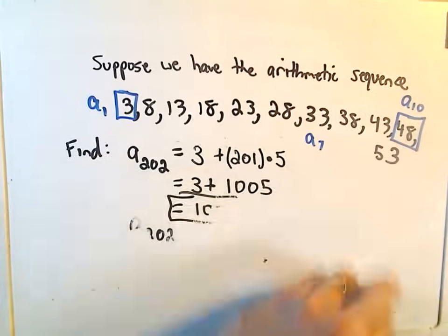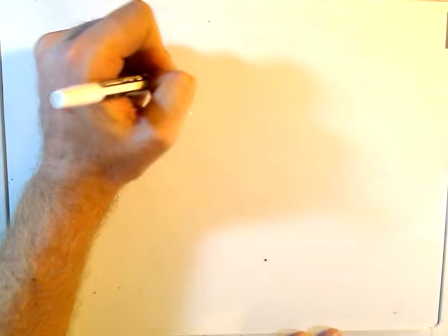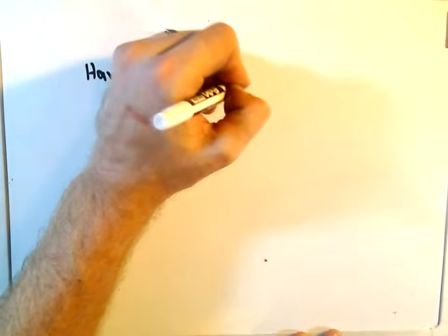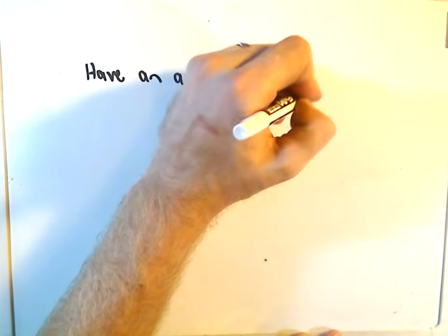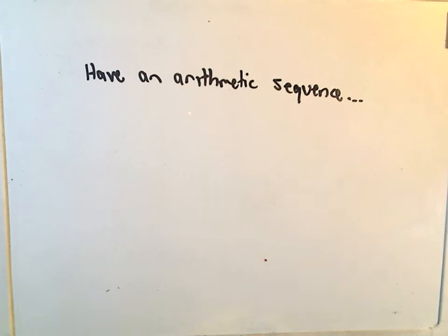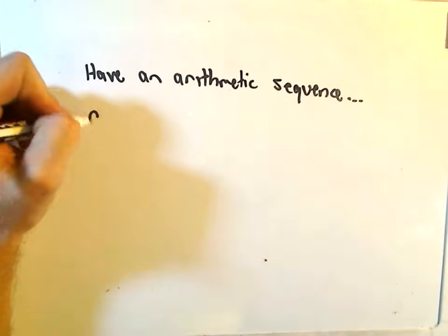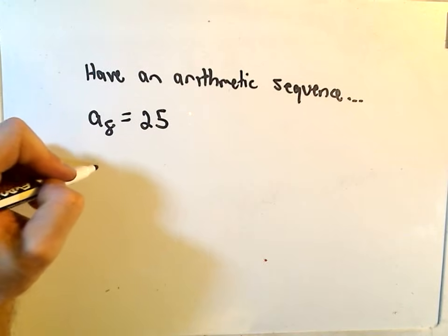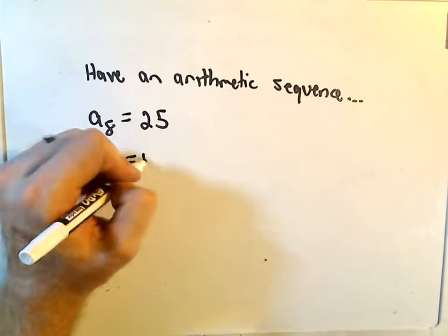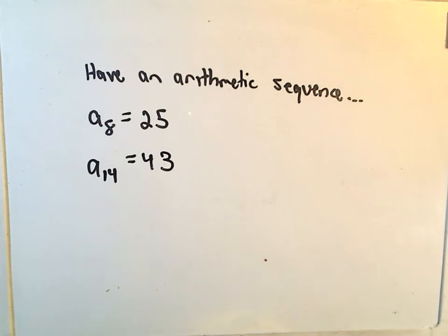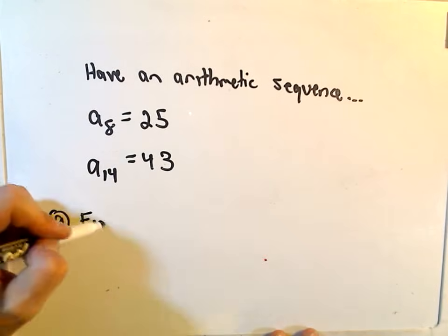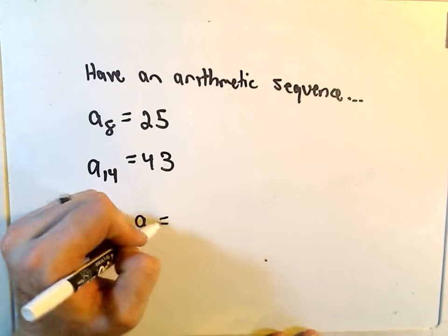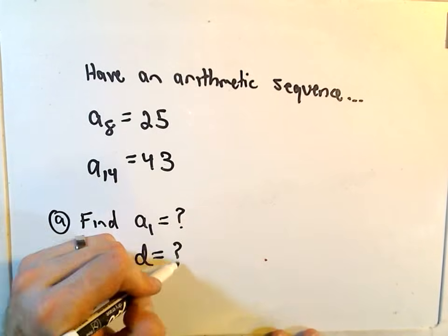Okay, so maybe let's do one just a little bit less straightforward. Suppose we know we have an arithmetic sequence. And suppose we know that our 8th term is equal to the number 25. And suppose we know that our 14th term is equal to 43. Okay, I want to do a couple things here. Let's find a couple things. Let's find both the first term, and let's also find our d value for this particular sequence.